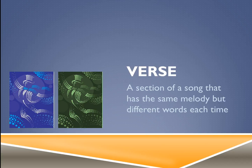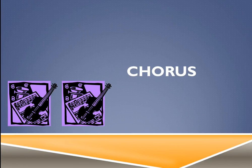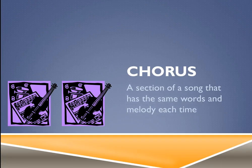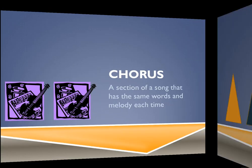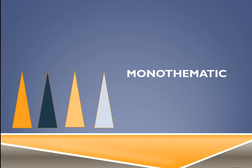A verse is a section of a song that has the same melody but different words each time. A chorus, on the other hand, is a section of the song that has the same words and the same melody each time. There are exceptions — sometimes choruses have slight changes in words — but that's the general rule.